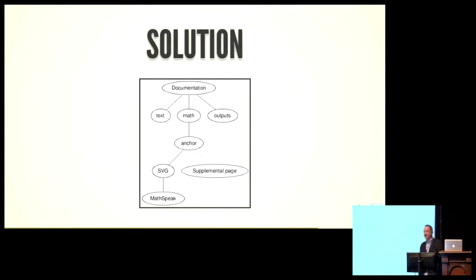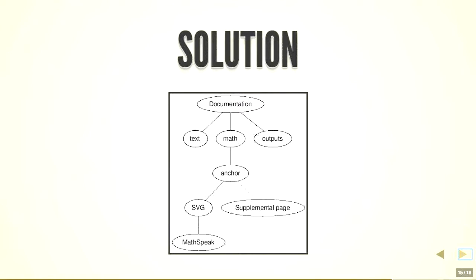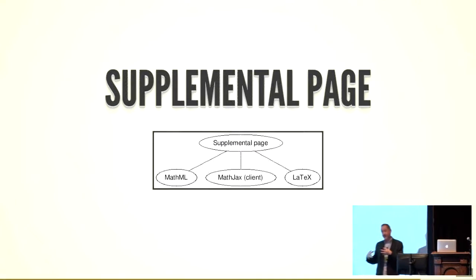And the way it works comes down to this slide. We have documentation with text, math, outputs, computer code, images, whatever. When we get to the math, if you follow that line down, what a sighted person will see is the SVG. A blind person will be able to hear the MathSpeak, for the most part. If they have a screen reader that doesn't work, that doesn't see that connection, that is embedded inside an anchor, and we give them this supplemental page. If it comes down to it, we at least have a fallback to that supplemental page, which has MathML. It's got another version of MathML rendered by MathJax. And because I've got the LaTeX source that created the equation, I show them that too, because I want to give them everything I've got. And this is about as good as we can do at this point.